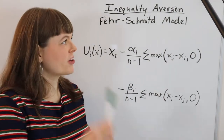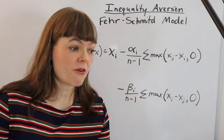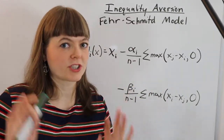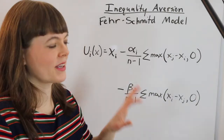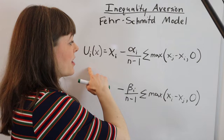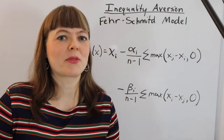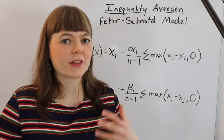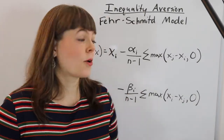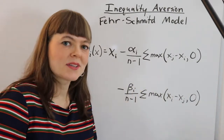In this video I'm going over the Fehr-Schmidt model of inequality aversion. If you haven't already, you should watch my other video on inequality aversion more generally — in that video I really set up the frame and look at the prisoner's dilemma. This is really just a utility function that captures some cool things about the human heart that's kind of flexible if you're going to think about how people are motivated. I really just want to go through this step by step and pull out its insights.